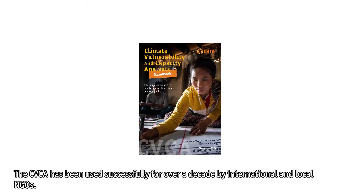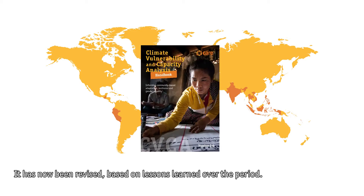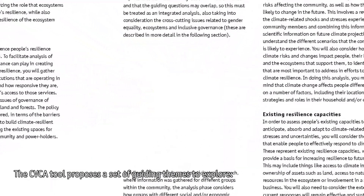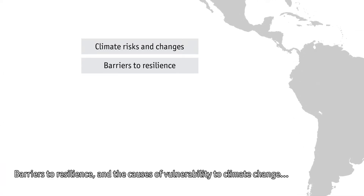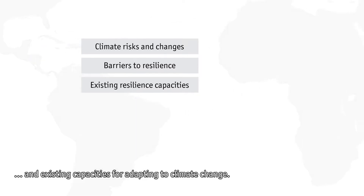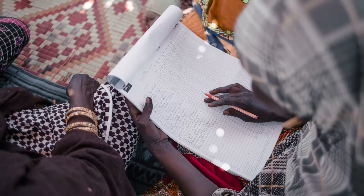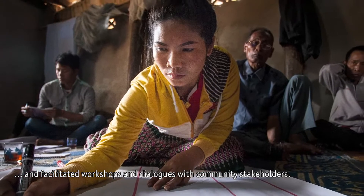The CVCA has been used successfully for over a decade by international and local NGOs. It has now been revised based on lessons learned over the period. The CVCA tool proposes a set of guiding themes to explore key climate risks and changes and their impacts, barriers to resilience and the causes of vulnerability to climate change, and existing capacities for adapting to climate change. The CVCA process relies on secondary research, interviews with key informants, and facilitated workshops and dialogues with community stakeholders.